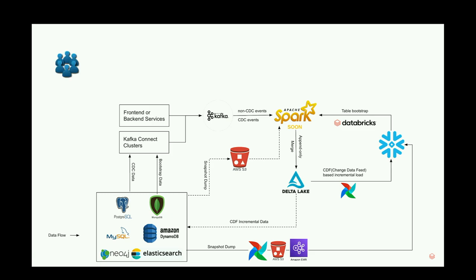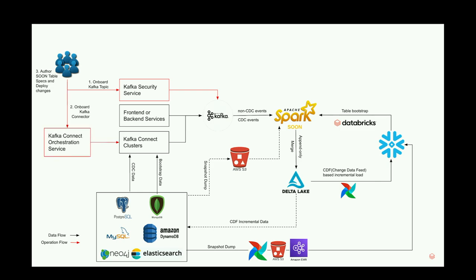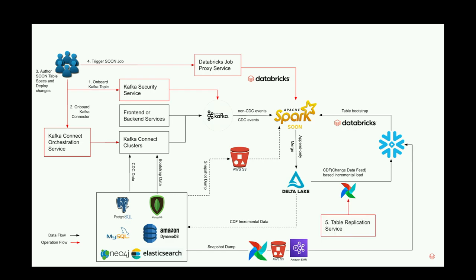For the user flow, to use the Swoom framework a user first needs to create a Kafka topic. For the table replication use case, they need to onboard Kafka source connectors through a Kafka orchestration service we built internally. They also need to implement a Swoom specification file, deploy the changes, trigger the job through a jobs proxy service, and if they want the table available in Snowflake, onboard it to the table replication service.